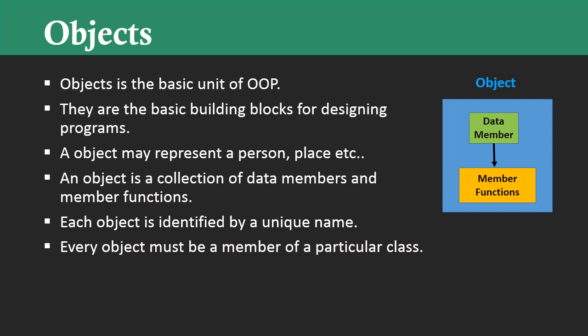Next, every object must be a member of a particular class. A class can have any number of objects. For example, we are all humans — we belong to which particular species? Homo sapiens. Each one of us has different names, different hair styles, different skin colors, different ways of talking, but all of us belong to a particular class. What is that class? The class is homo sapiens. So these are the key points regarding objects.